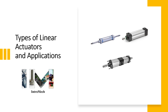Hello and welcome to our channel Intro Mac, where we discuss basic mechanical engineering concepts. Whenever we design some kind of machine or application, we widely use linear actuators, and there are different types of actuators available according to the application. We should know what these different types are, their working principle, advantages, and disadvantages, so that it becomes easier to select the proper linear actuator.